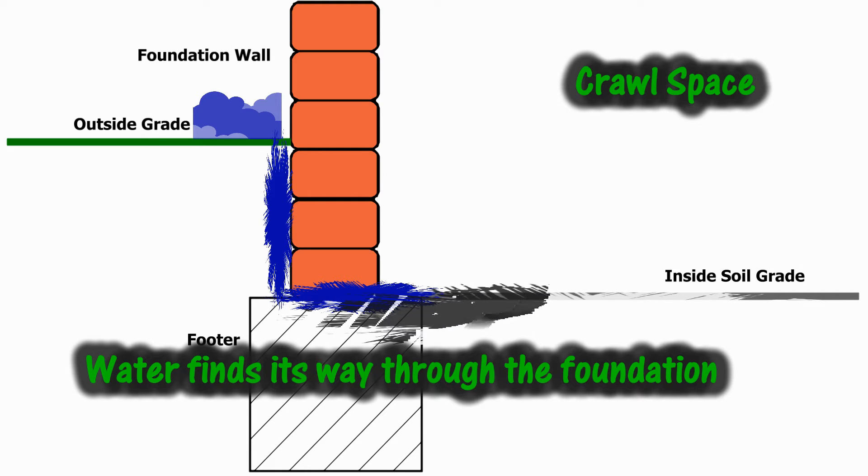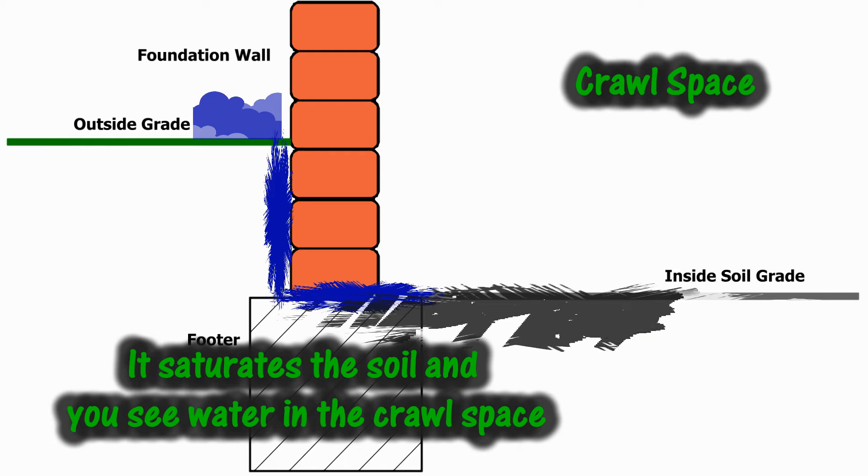As it does, it begins to saturate the soil. This causes the water table to rise and soon you will see water sitting on top of the soil in the crawl space.